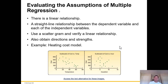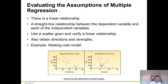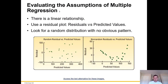We're assuming a linear relationship — there should be a roughly straight line relationship between the dependent variable and each independent variable separately. We can use a scattergram to verify a linear relationship and get some idea about direction and strength. Looking at cost versus temperature, it looks like a negative linear relationship, moving from top left to bottom right. Cost versus insulation looks more like maybe a slightly positive line, but they appear more scattered, indicating less or no correlation. If there's a linear relationship, we can use a residual plot to look at residuals versus predicted values — we're looking for a random distribution with no obvious pattern.